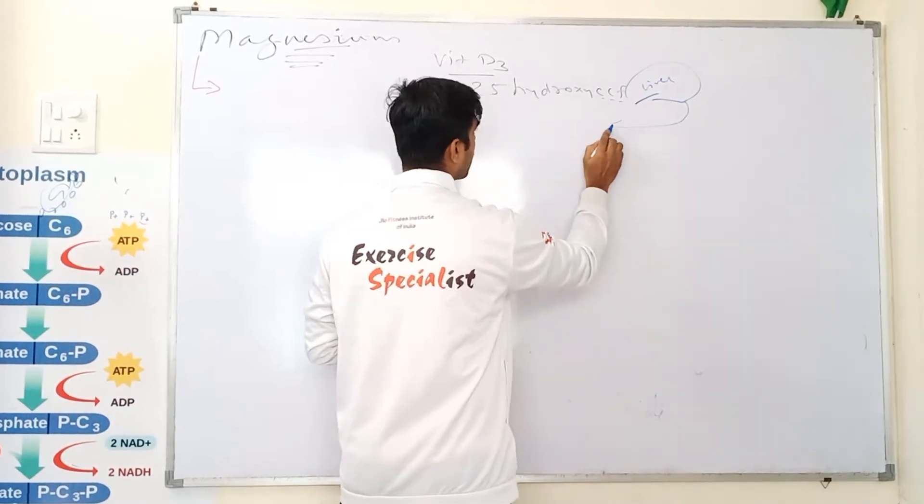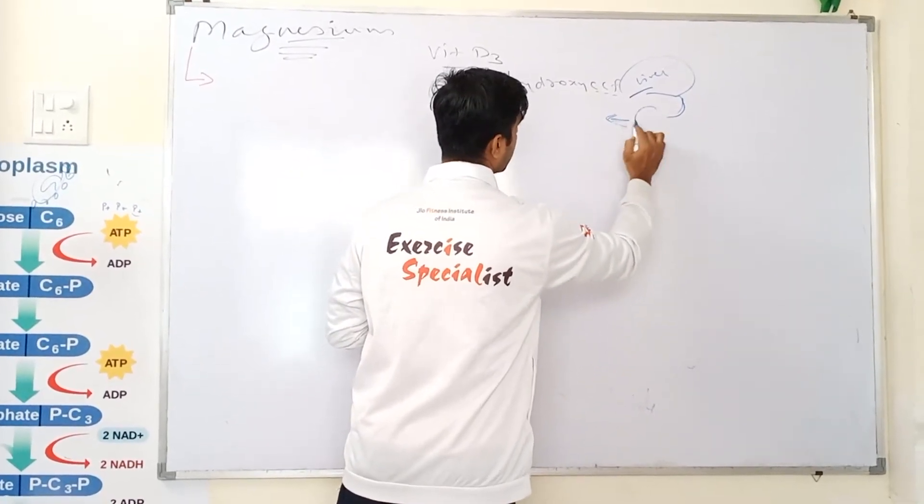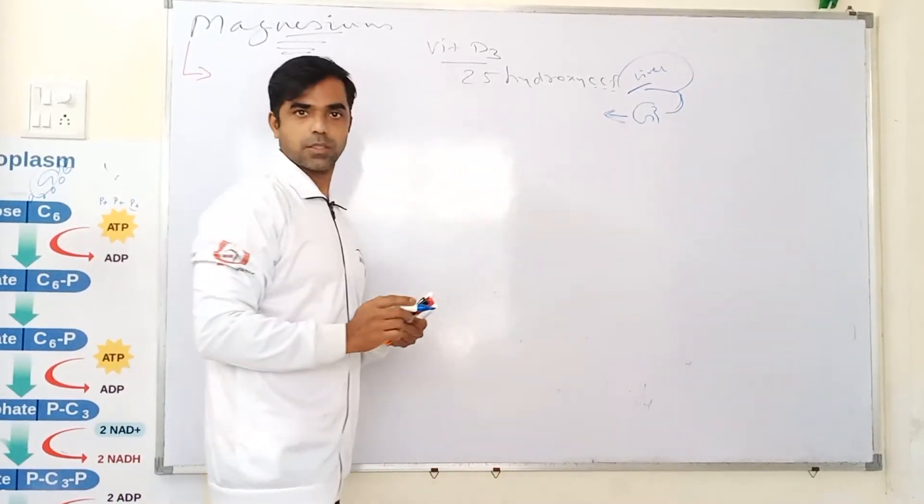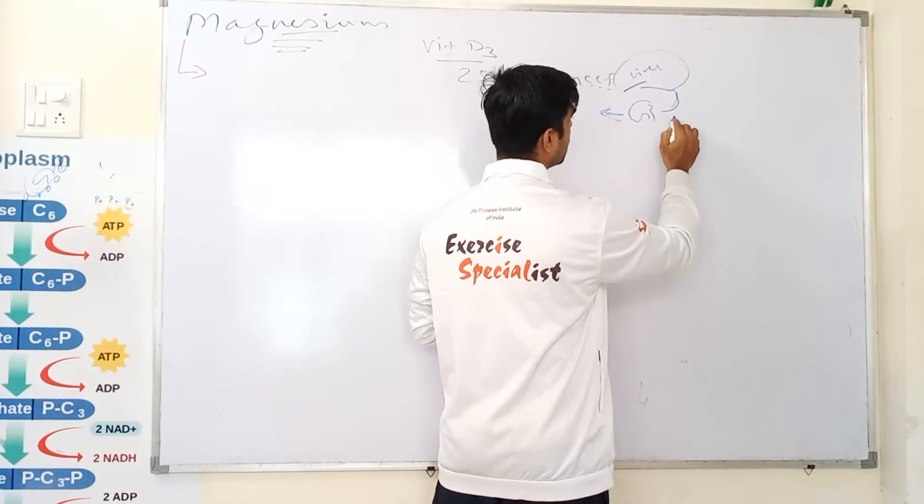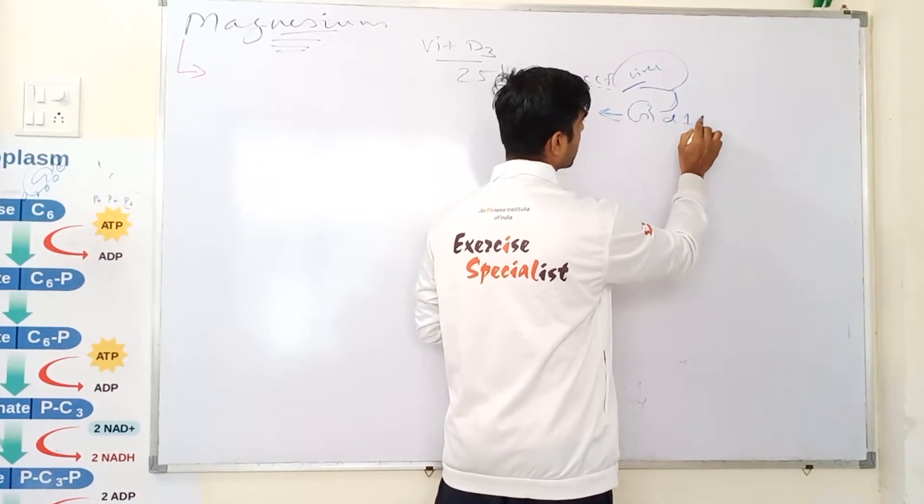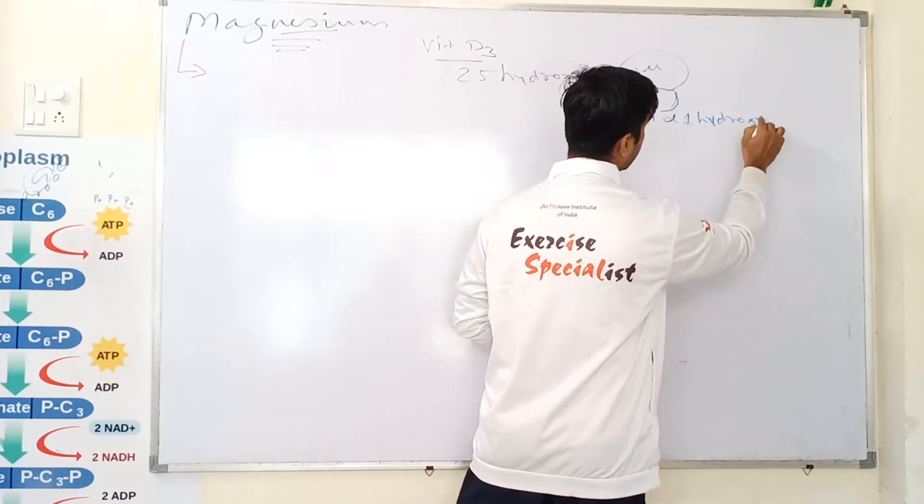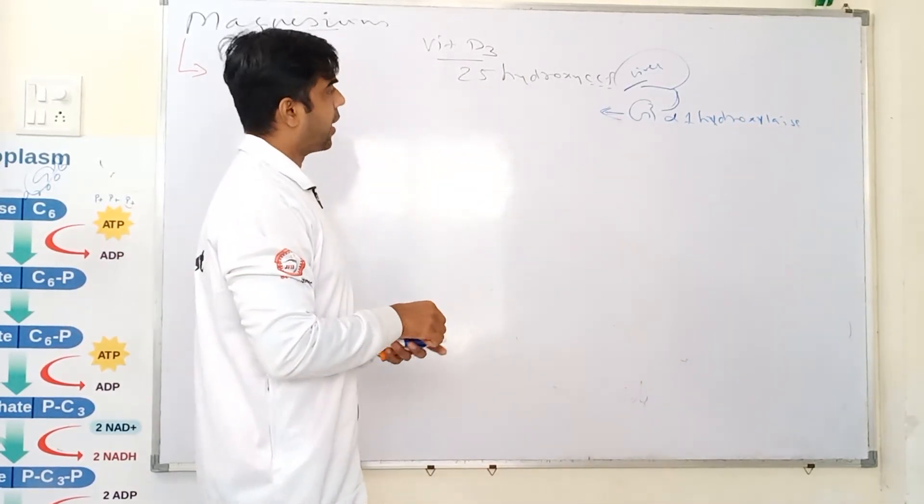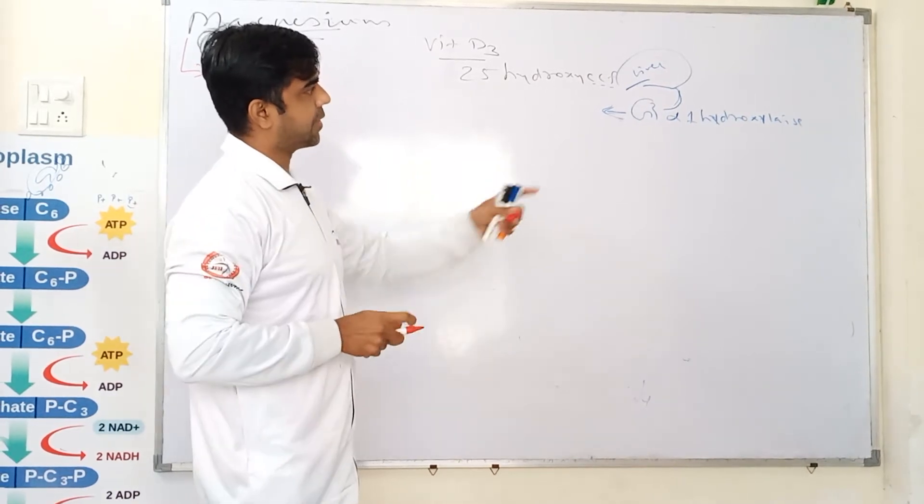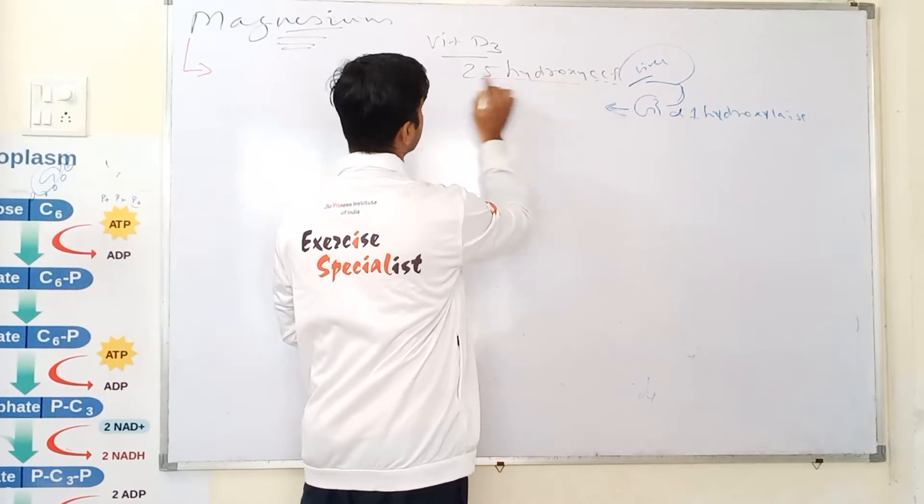Then we have to mature this. We have to mature this in kidney, which is done by alpha-1 hydroxylase enzyme. Right. And then once this enzyme is acted upon, storage form, this is storage form.